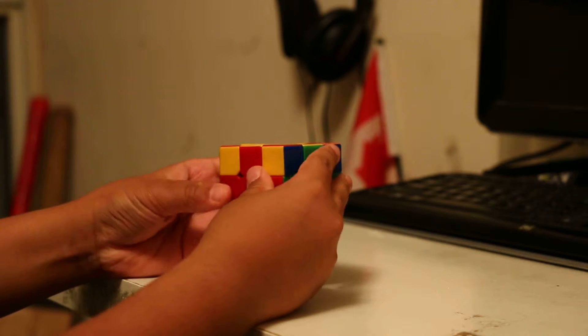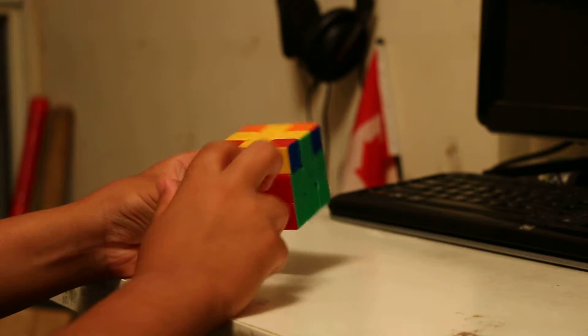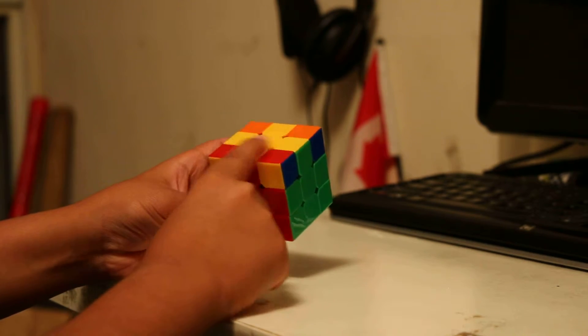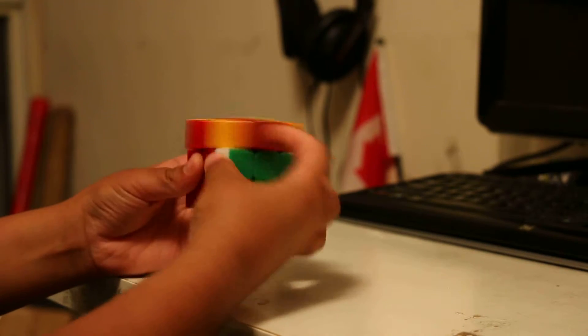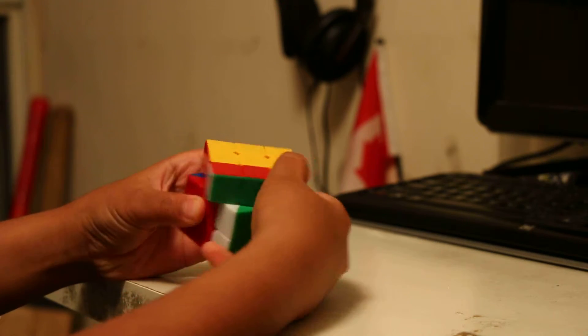For the first case, we have the yellow corners facing you and in the back, and the color bars are horizontal. You would do this algorithm: F, triple sexy move, F prime. Now on to the next one.